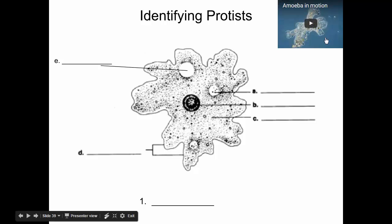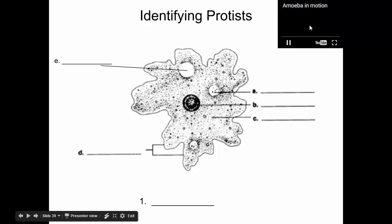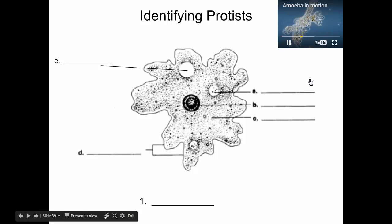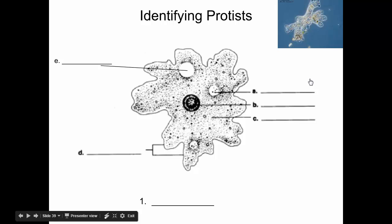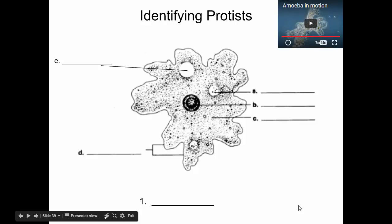This is obviously an amoeba with its irregular shape. You can see in this video it moving — you can see these pseudopods extending, kind of oozing forward. It doesn't move very quickly, but it does move. You can see the cytoplasm within it; it's called cytoplasmic streaming as it moves. The back part is withdrawing in while the other parts move forward. That's how amoebas move.